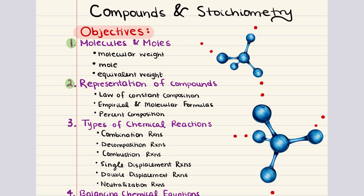The third objective is titled types of chemical reactions. There are a few types we're going to cover: combination, decomposition, combustion, single and double replacement, and neutralization reactions.